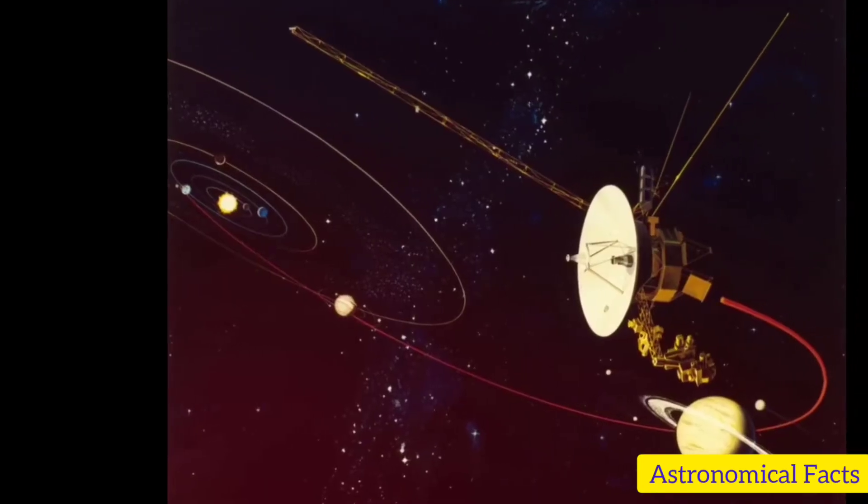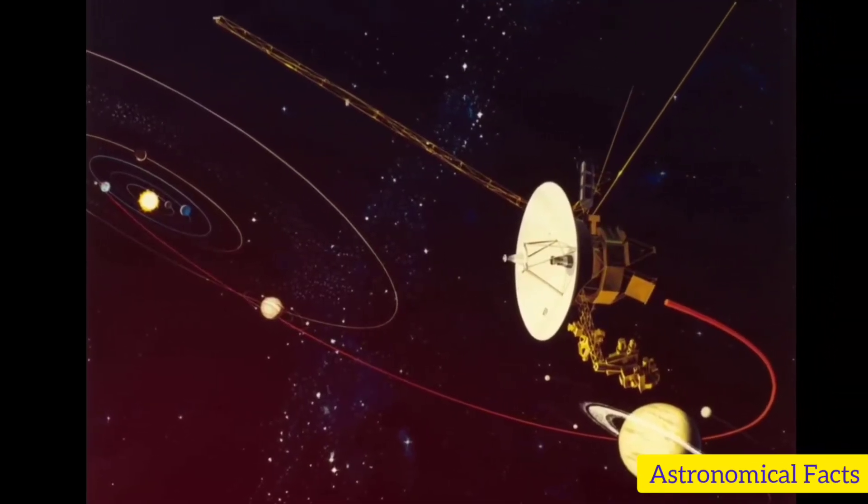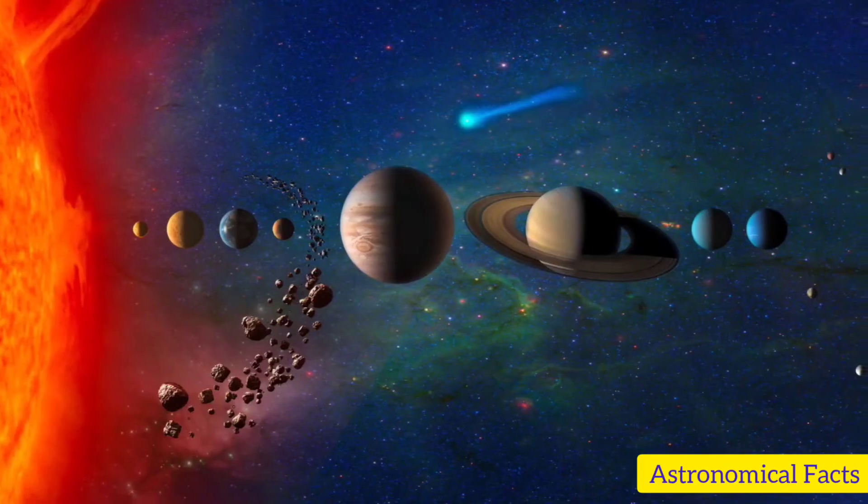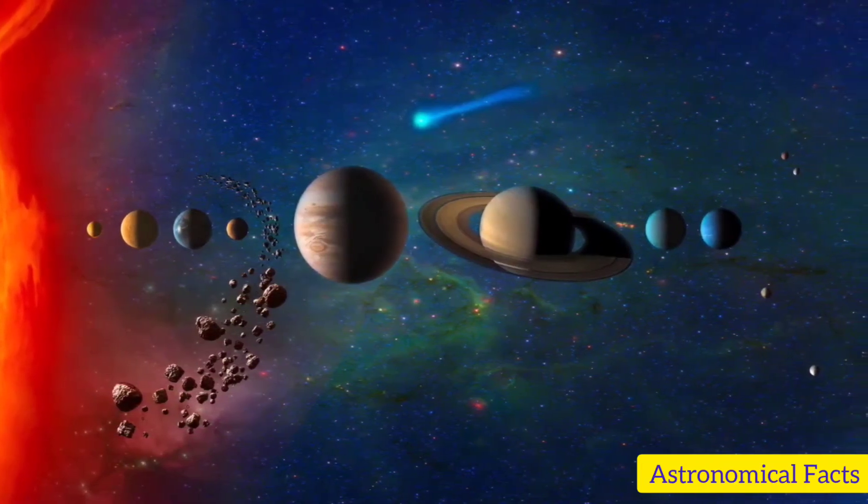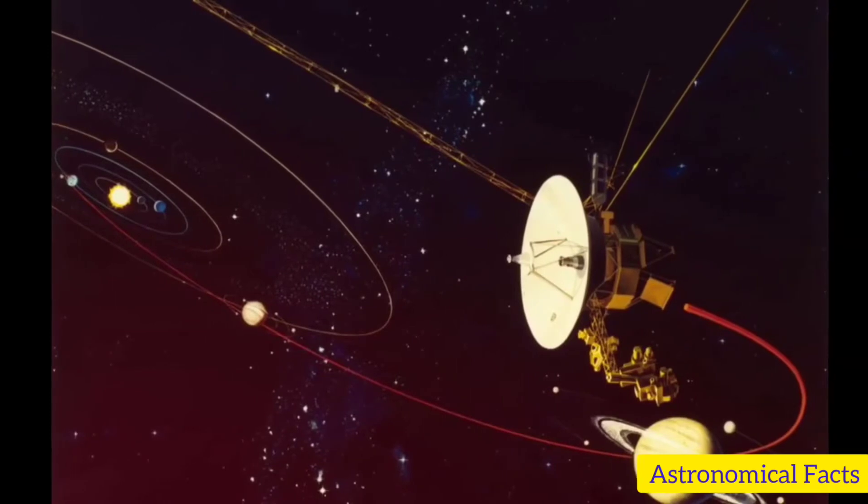Thereafter, Pioneer 10 became the first of five artificial objects to achieve the escape velocity needed to leave the solar system. This satellite was sent for the following reasons.